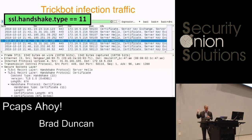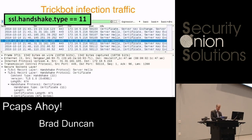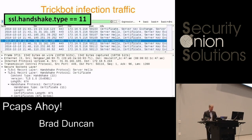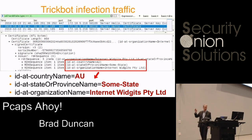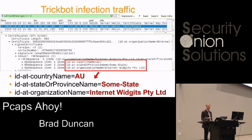The first category of alerts was malicious SSL/TLS certificates in traffic to TCP ports 449 and 447. Filter on SSL handshake type equals 11, work down through the certificate data to the issuer, and you'll find interesting information — the company name is 'Internet Widgets PTYLTD', the domain is 'example.com', and the state or province name is 'Some State'. These are clearly bogus, self-signed certificates that indicate malicious traffic.